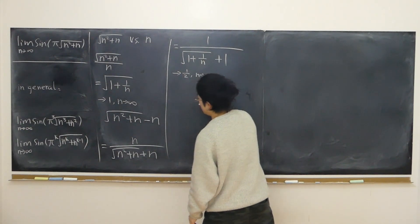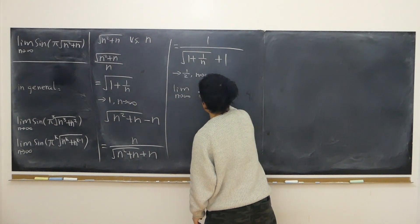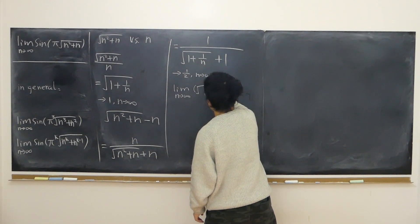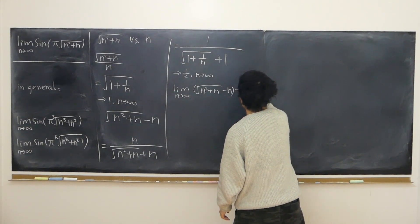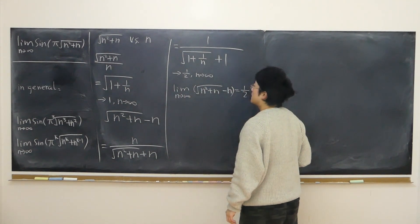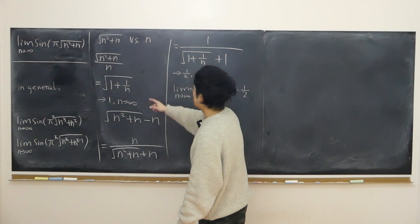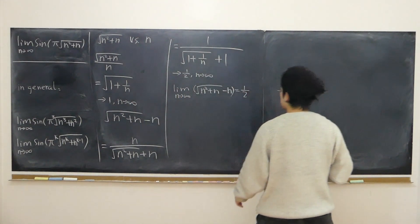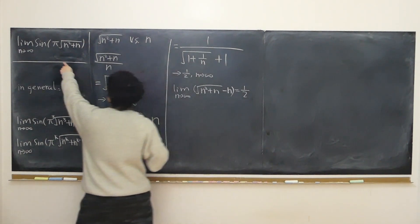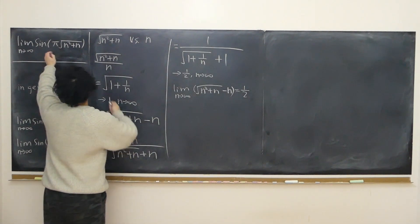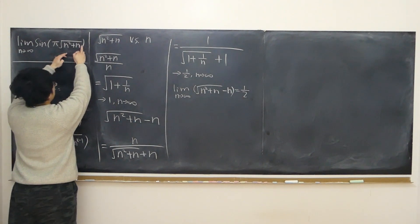Let me write down my conclusion. In other words, the limit as n approaches infinity of square root of n squared plus n minus n is indeed half. This result motivates me to think about whether I can use this expression and whether I can minus n.